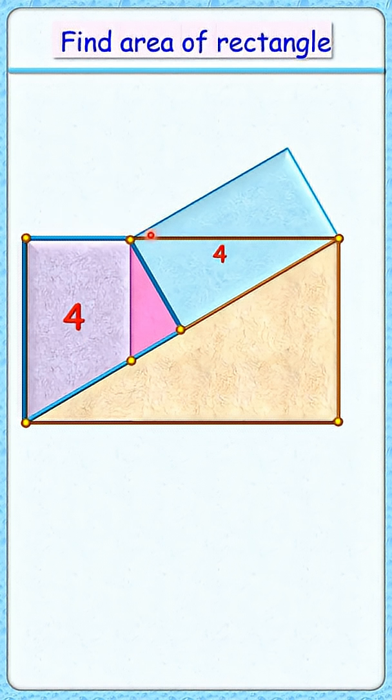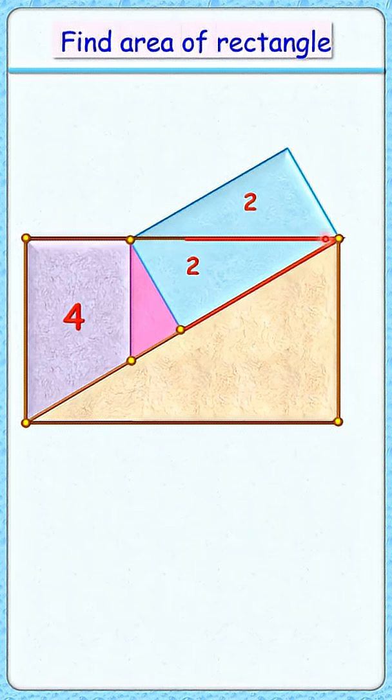In this blue rectangle, this is the diagonal, and we know that diagonal divides rectangle in two equal areas, so this area is 2 centimeters square. So this complete area is 4 plus 2, that is the area of this red triangle is 6 centimeters square.